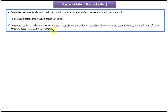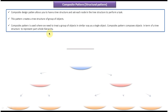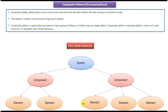Basically, using this design pattern we can create a tree structure which composes of objects, and that tree structure is used to represent the part-whole hierarchy. I will show some diagrams so that you will understand this design pattern very easily. So this is called part-whole hierarchy. You can see here: a system is made up of subsystems or components, and the component is made up of smaller elements. This whole thing is like a tree structure.